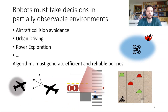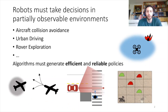Robots must make decisions in partially observable environments, in situations like aircraft collision avoidance, autonomous urban driving, or rover exploration. Through those applications, algorithms must generate efficient and reliable decision policies automatically.